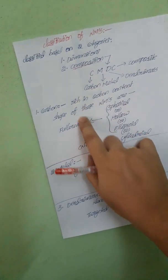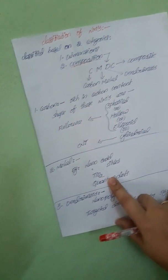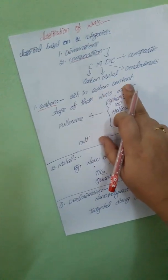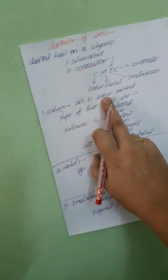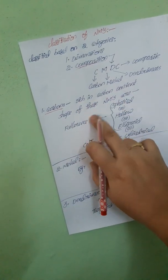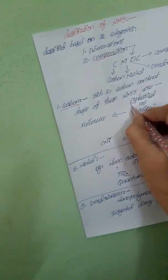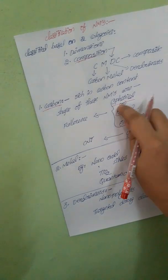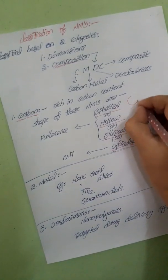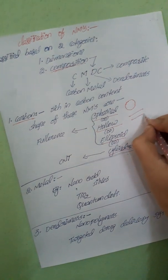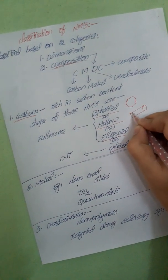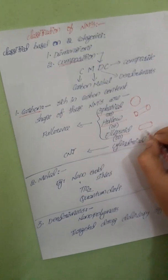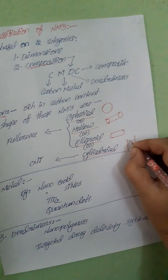First, we will see what is meant by carbon-based nanomaterials. Carbon-based nanomaterials are rich in carbon content. The shapes of carbon-based nanomaterials are spherical, hollow, ellipsoid, and cylindrical. Spherical shape is like a ball-like structure, hollow means it is like a tube-like structure, ellipsoid means it is like a capsule-like structure, and cylindrical is like a cylindrical shape.